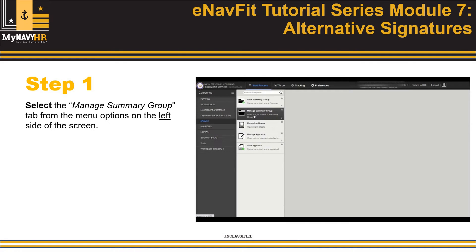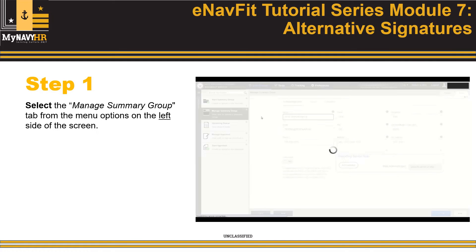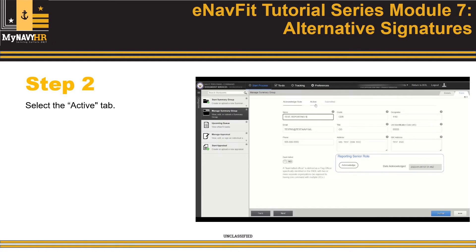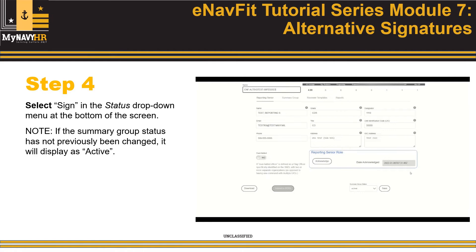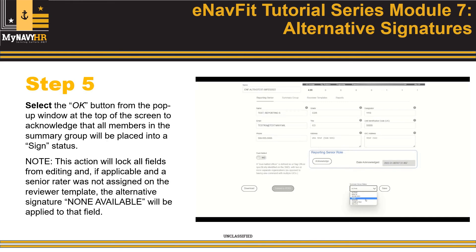Step 1: Select the Manage Summary Group tab from the menu options on the left side of the screen. Step 2: Select the Active tab. Step 3: Select the Open button next to the summary group to be signed. Step 4: Select Sign in the Status drop-down menu at the bottom of the screen. If the summary group's status has not previously been changed, it will currently say Active. Step 5: Select OK on the pop-up dialog window to acknowledge that all members in the summary group will be placed into a signed status.